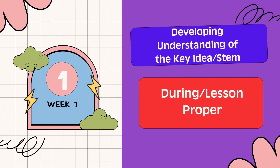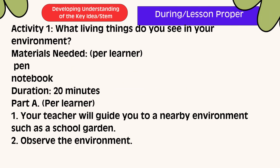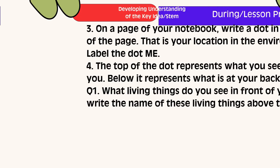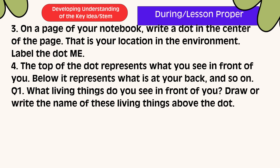Developing Understanding of the Key Ideas. Here are the materials that you're going to need. Part A: Your teacher will guide you to a nearby environment such as the school garden. Observe the environment. On a page of your notebook, write a dot in the center of the page — that is your location in the environment. Label the dot 'me.' The top of the dot represents what you see in front of you; below it represents what is at your back, and so on.